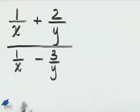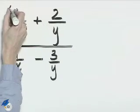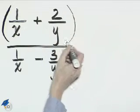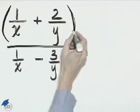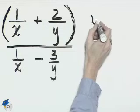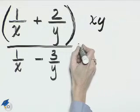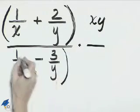The least common denominator is xy. So we can multiply the numerator by xy and we'll multiply the denominator by xy.